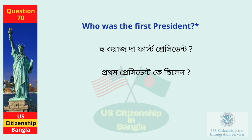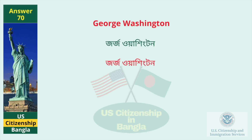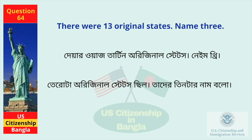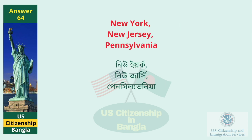Who was the first president? George Washington. There were 13 original states. Name three. New York, New Jersey, Pennsylvania.